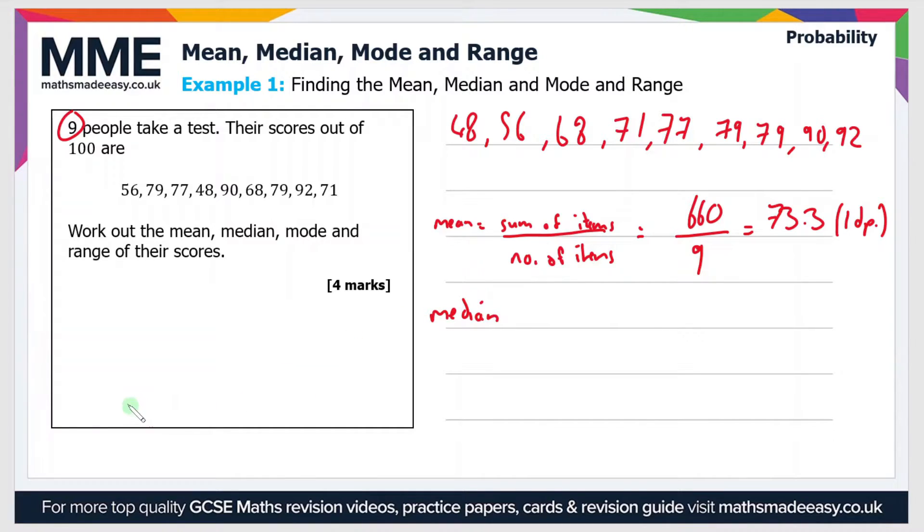So if you remember the formula for finding the position of the median is n plus 1 over 2. Now as we said before n is 9 so that becomes 10 over 2 which is 5. So the median is the fifth item in the list.